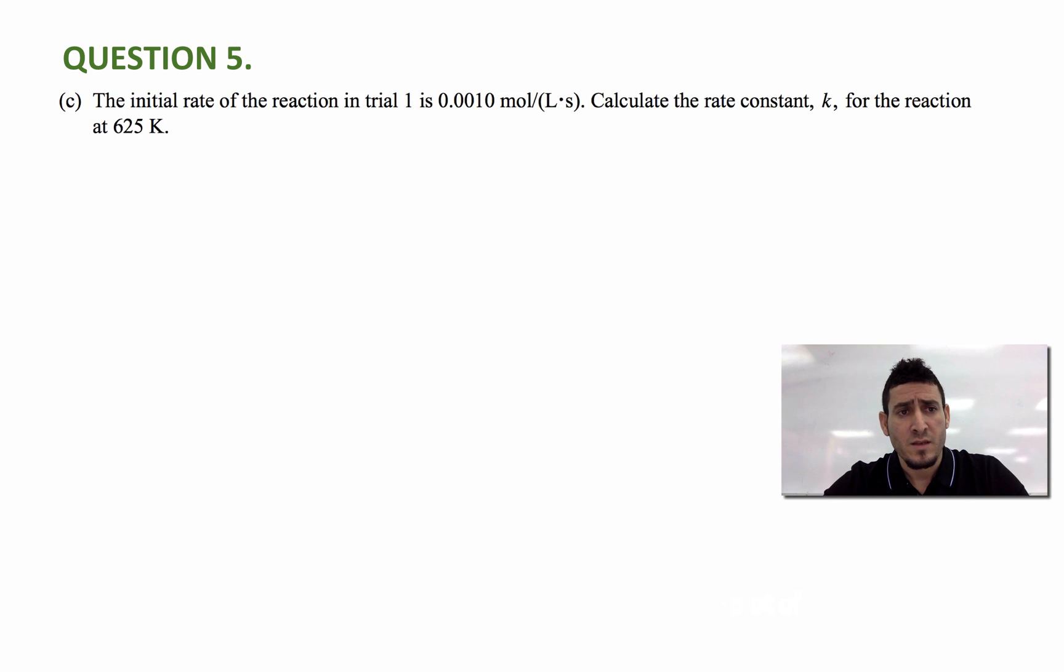The last part in this question is part C. It says the initial rate of the reaction in trial one is 0.0010 mole per liter second. Calculate the rate constant k for the reaction at 625 Kelvin.